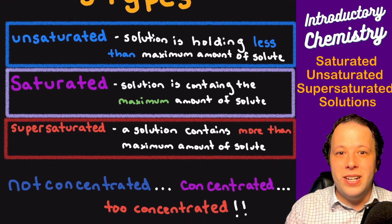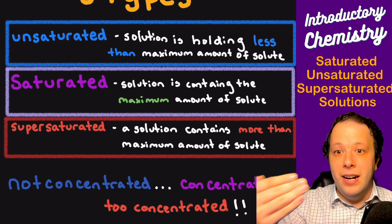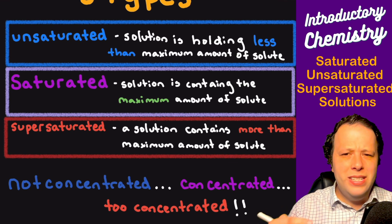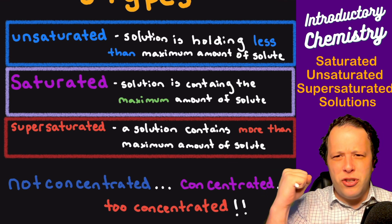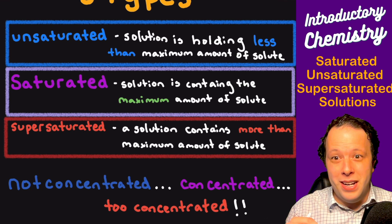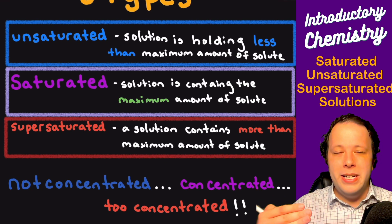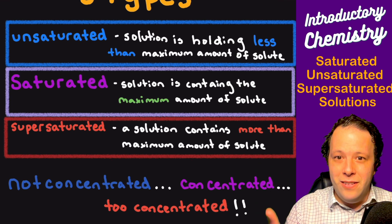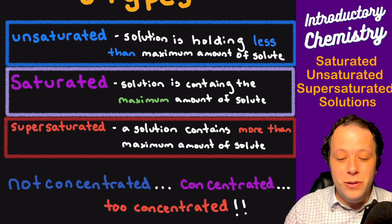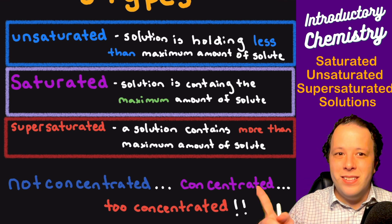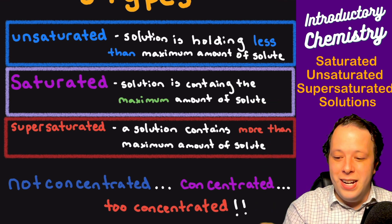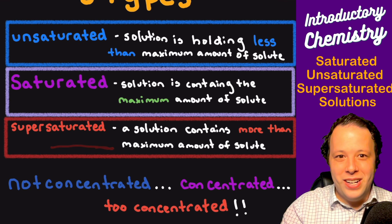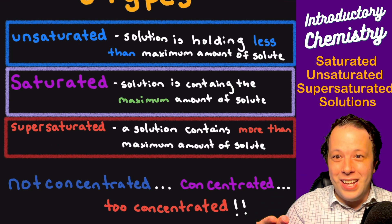Supersaturated is when it goes way beyond what it's able to handle. That means that you are way above the maximum and it's still in solution somehow. This one has like the super strength that's available. We'll show you how that's exactly possible. Usually when you're saturated, if you add more solid into it, it's just going to precipitate out, but there's a way to kind of trick the molecules into being supersaturated.